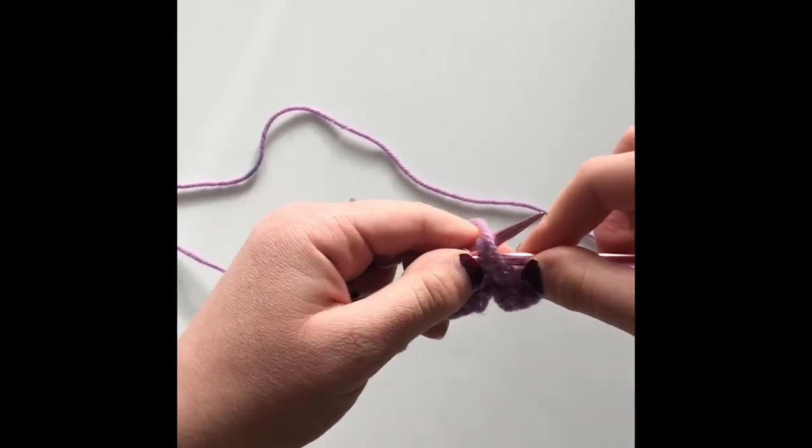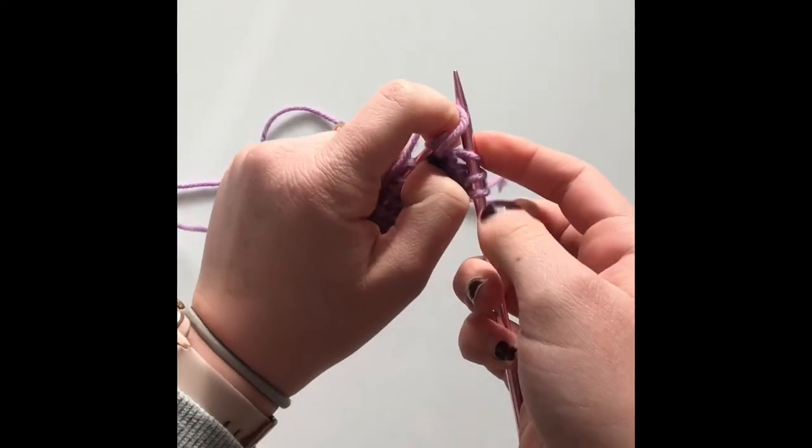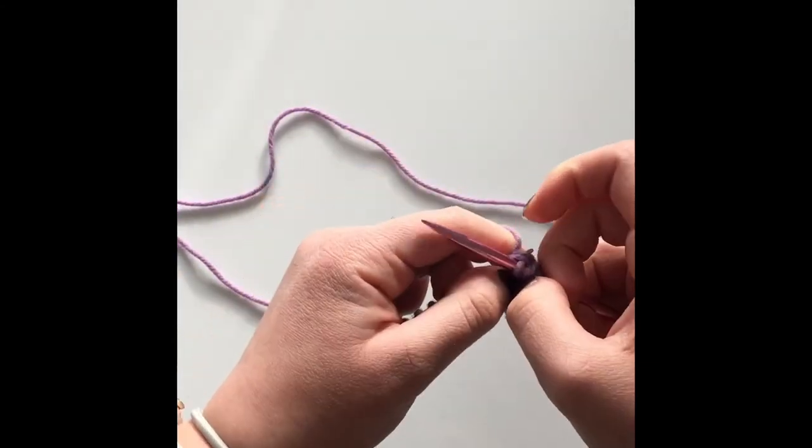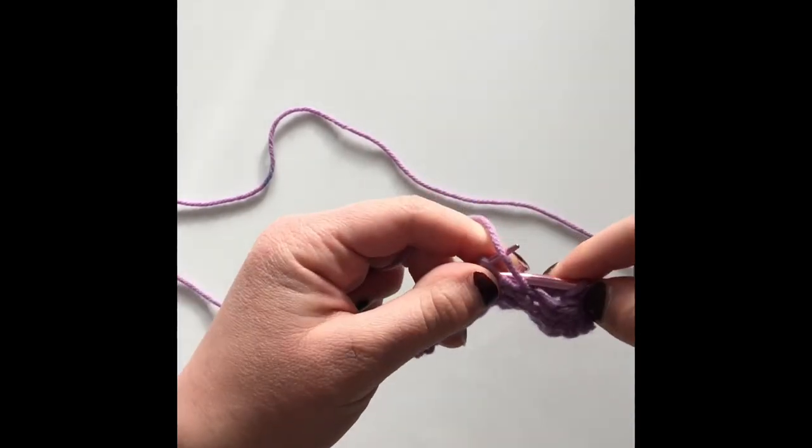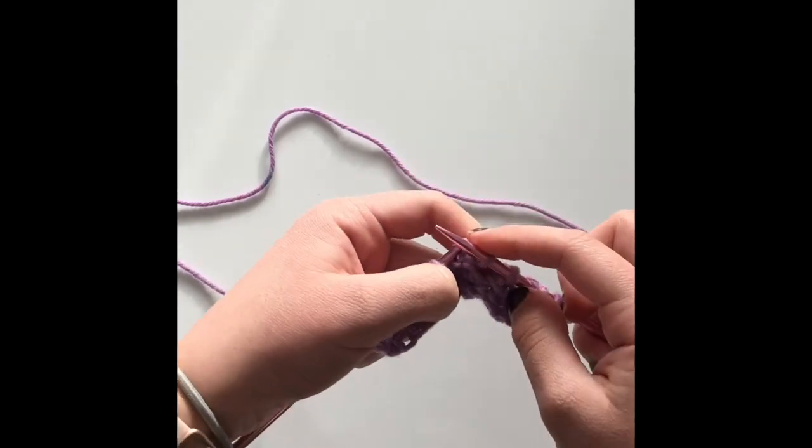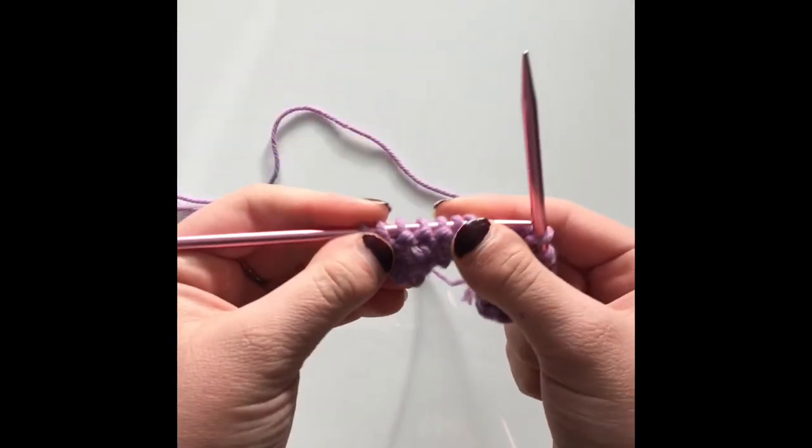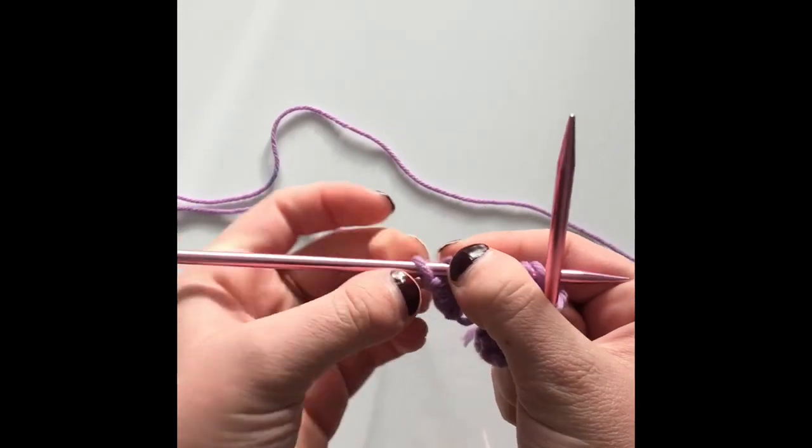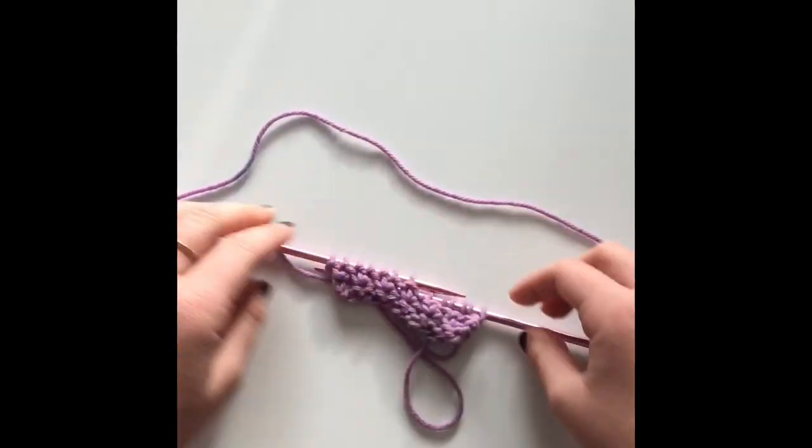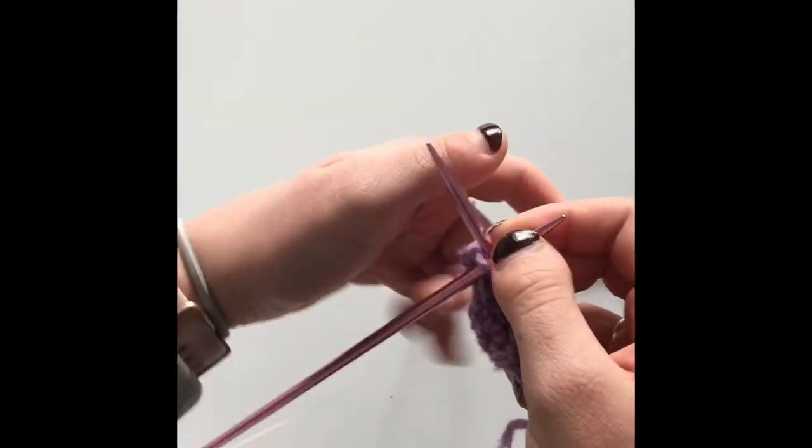So yarn in front, purl these two stitches together, and then knit these two stitches together and take the yarn off. So we are going to do this until the end of the row. And since we have an odd number of stitches casted on, you will notice that there will be one stitch left. So we'll have these two together, then these two together, then these two together, then these two together. And this one, we are just going to simply knit that stitch. So go to the end of the row and then I will meet you back for one last time. Okay, so I've come to the end of my row here with one stitch remaining. I'm just going to knit that stitch.